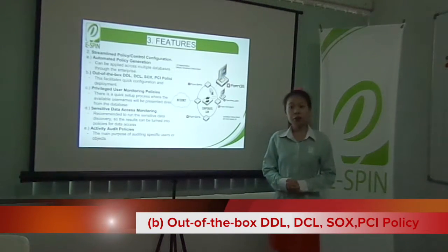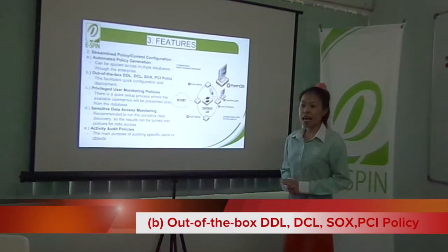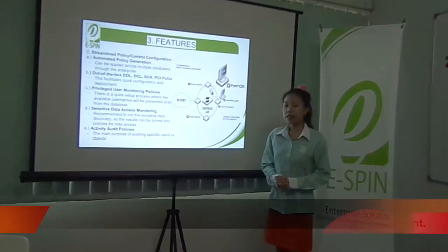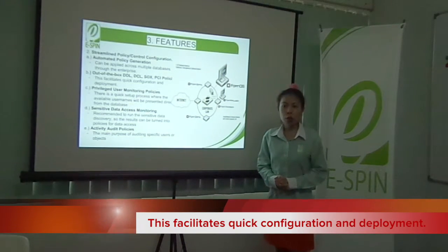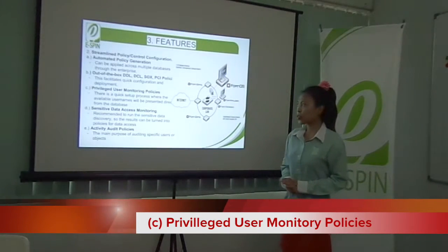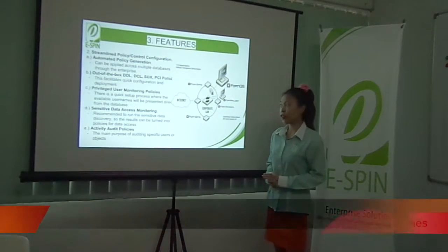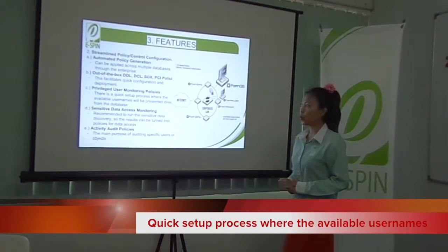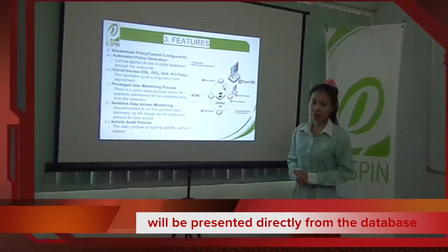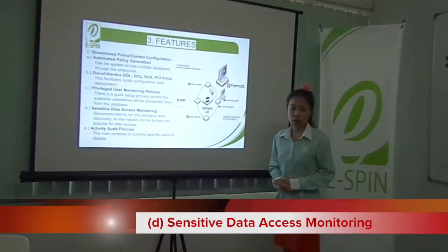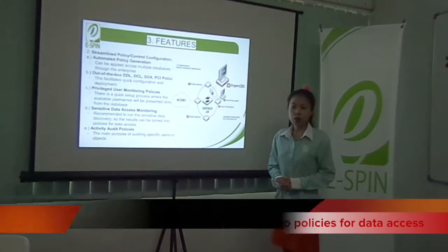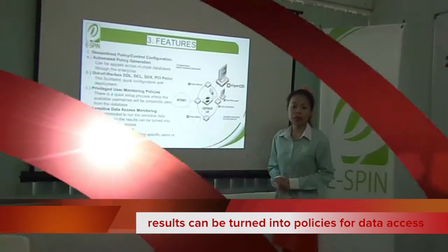First is Automated Policy Generation, which can be applied across multiple databases throughout the enterprise. Second is out-of-the-box DDL, DSL, SOX, and PCI policy — this facilitates quick configuration and deployment. Privileged User Monitoring Policies involve a quick setup process where the available user names are presented directly from the database.